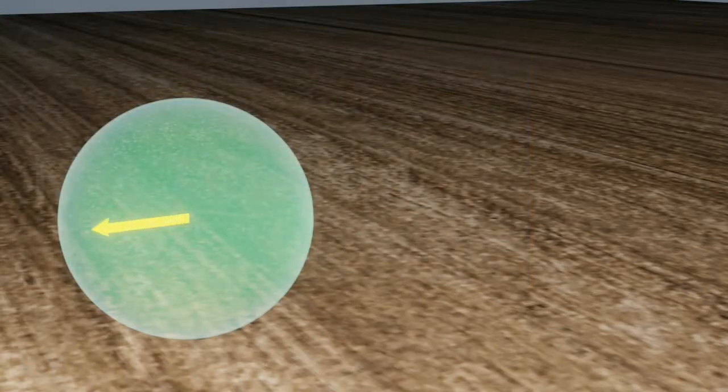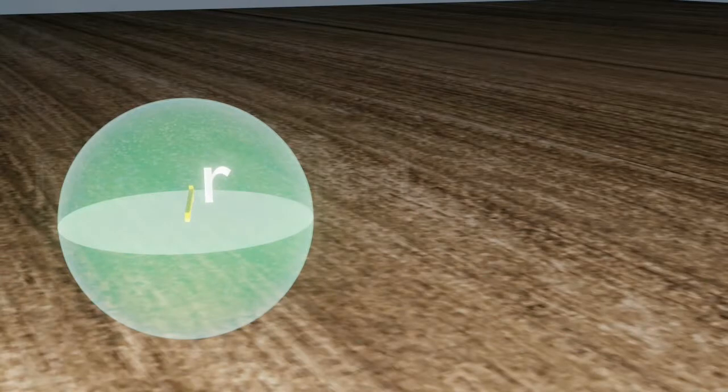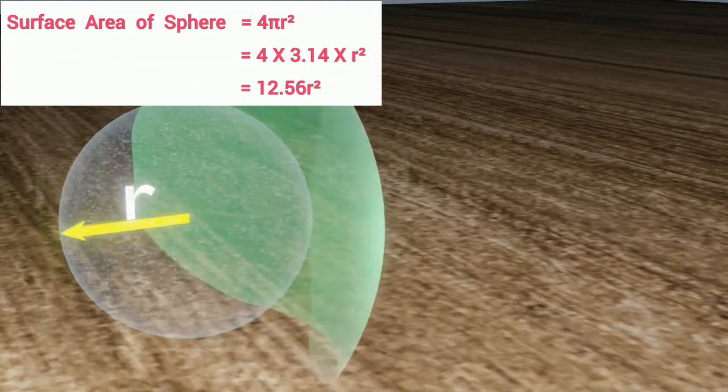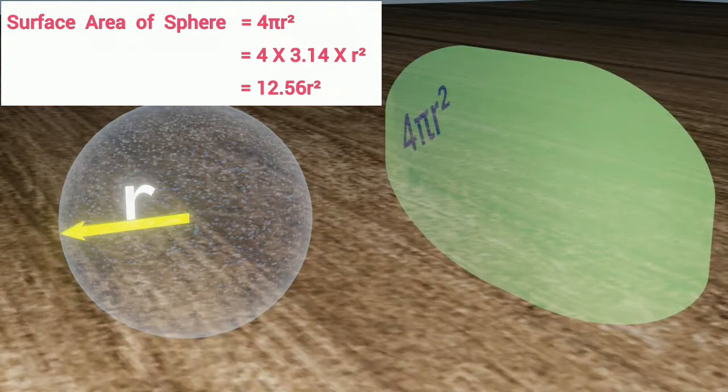Its radius may be of any size of your imagination. Let its value be R. Therefore, its surface area should be 4 pi R square, or 12.56 R square after putting value of pi, which is approximately 3.14.